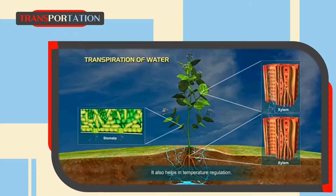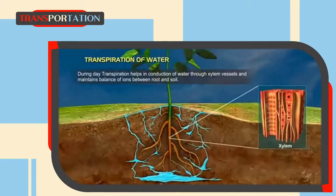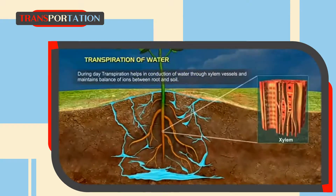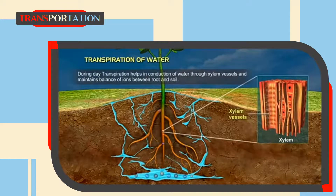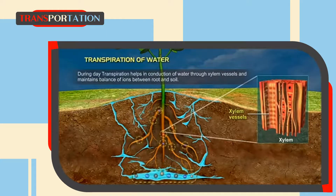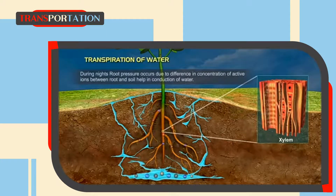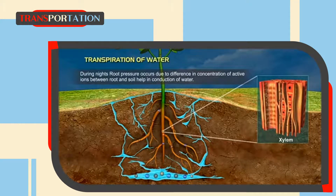Transpiration also helps in temperature regulation. During the day, transpiration helps in conduction of water through xylem vessels and maintains balance of ions between roots and soil. During the night, root pressure occurs due to the difference in concentration of active ions between root and soil, which helps in conduction of water.